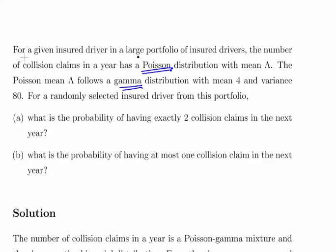For a given insured driver in a large portfolio of insured drivers, the number of collision claims in a year has a Poisson distribution with mean capital lambda. The Poisson mean capital lambda follows a gamma distribution with a mean 4 and a variance of 80. This will help us parameterize, find out the parameters of the gamma distribution. For a randomly selected driver from this portfolio, what is the probability of having exactly two collision claims in the next year and what is the probability of having at most one claim in the year?